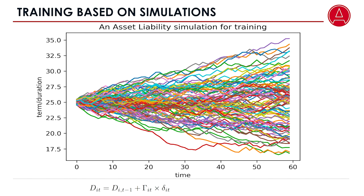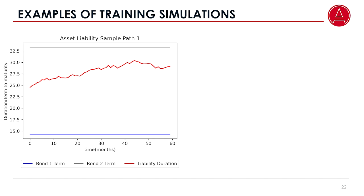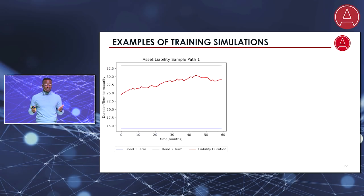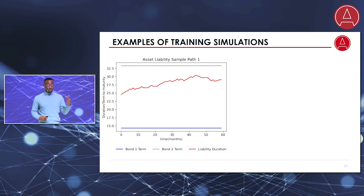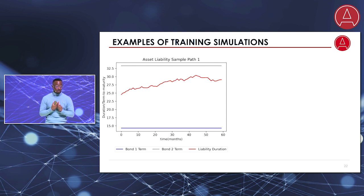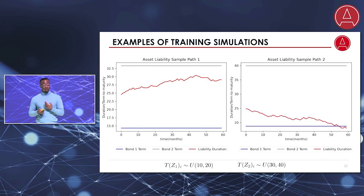Zooming into one scenario for illustration, we have an increasing duration over time. This might correspond to a life insurance company where the average age of policyholders is reducing over time and the time to claim is increasing. We also simulate a short bond and a long bond. We have a simplified scenario with two assets — zero coupon bonds — where the short bond is represented in blue and the long bond in gray. What we would expect the AI to do here is to allocate more towards the long bond because the duration is increasing, and less towards the short bond.